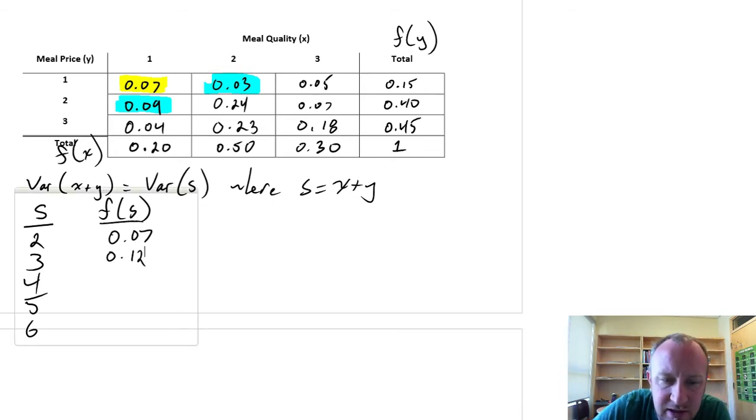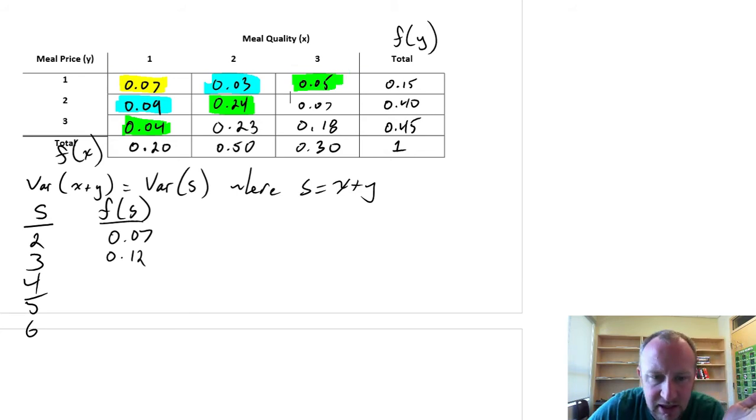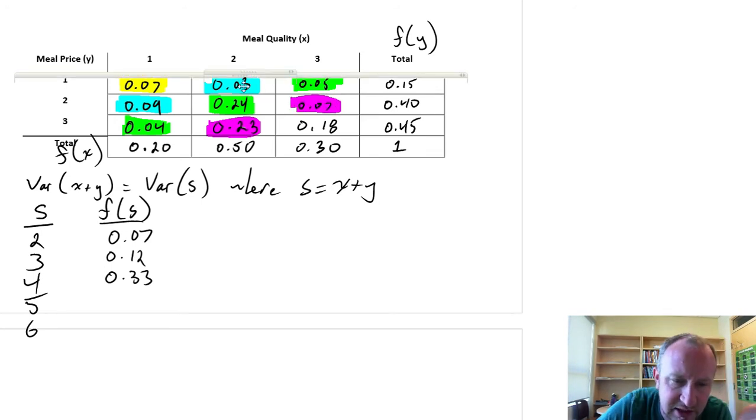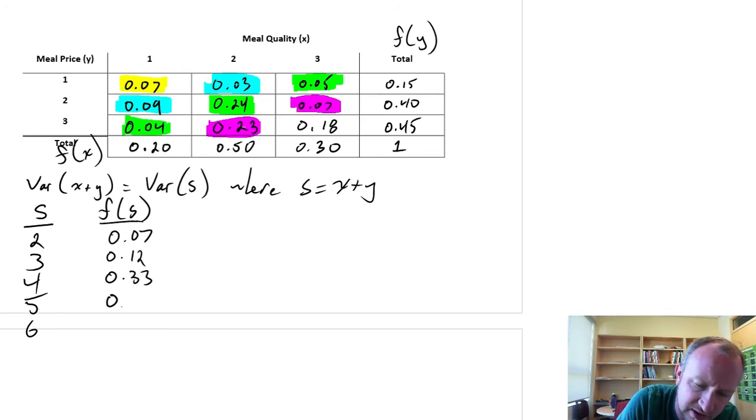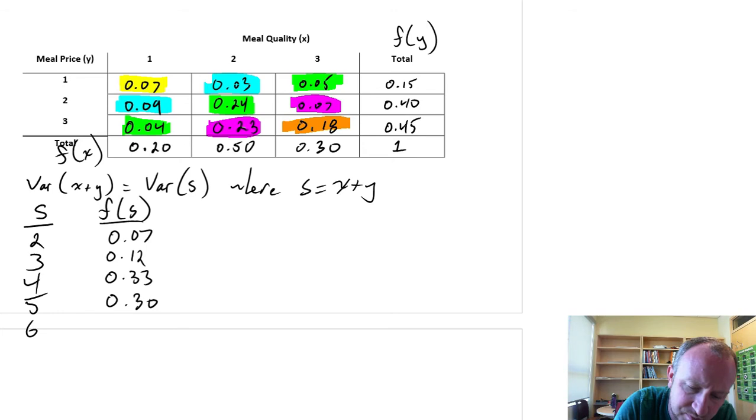And we do the same calculation for 4. Where can s equal 4? 3 plus 1, 2 plus 2, and 1 plus 3. We just add these probabilities together, and what we have is 0.33. Moving on, where is s equal to 5? 3 plus 2, and 2 plus 3. So here's a value of 0.3. And where is s equal to 6? There's only one location, or one combination of values for x and y, where s is equal to 6. And so this gives us our last frequency is 0.18.